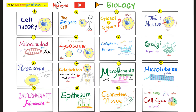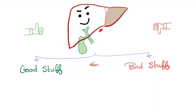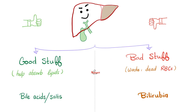The liver can produce some good stuff and some bad stuff. The good stuff is bile acids and bile salts, because they help you absorb fat through emulsification. The bad stuff is bilirubin.